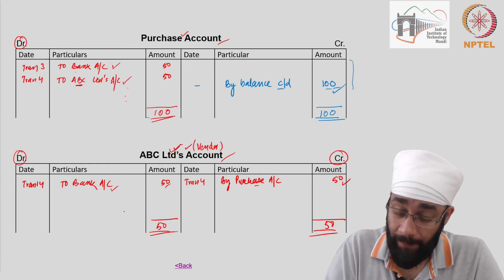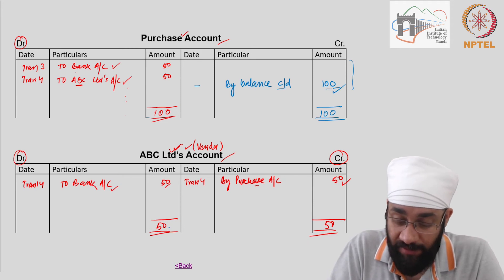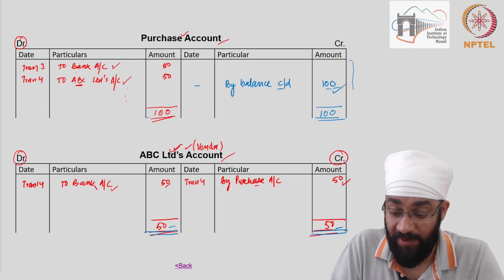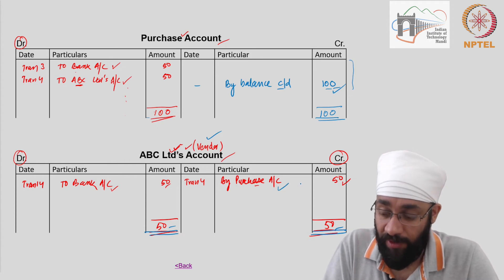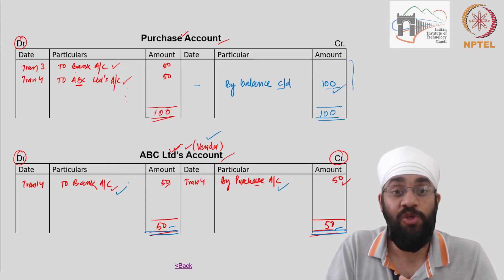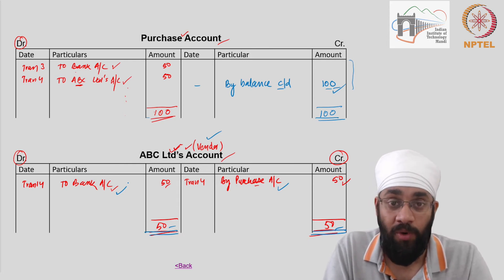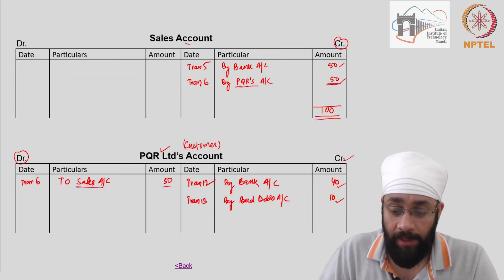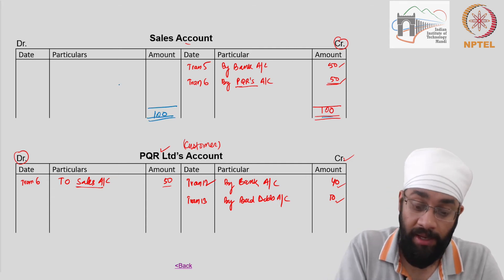ABC's account interestingly already has 50 on both sides and I closed this account in the previous video — there is no balance. ABC was a vendor. You purchased from him 50 and you paid him 50, so there is no balance to be carried down. The business does not carry any liability towards ABC Limited — that is what this account is indicating.